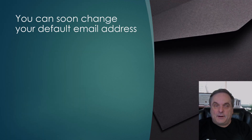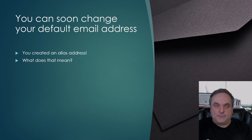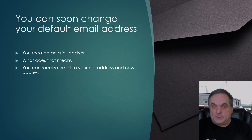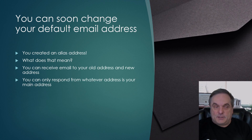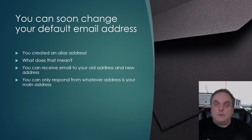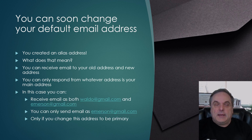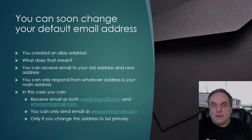Waldo is still there. What you did was create what's called an alias email address. That means you can receive email to your old address, Waldo, and your new address, Emerson. But when you go to respond to an email, it's only going to respond from whatever is considered your primary address. You can receive email as both waldo@gmail.com and emerson@gmail.com, but you can only send email as Emerson.